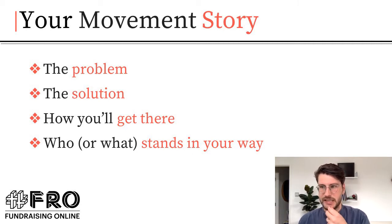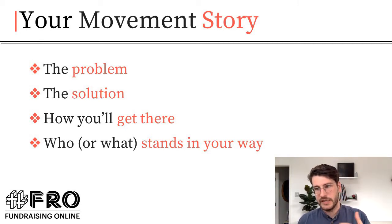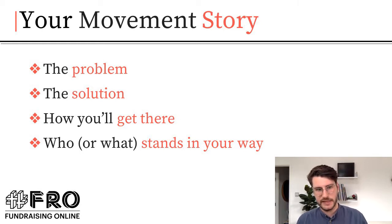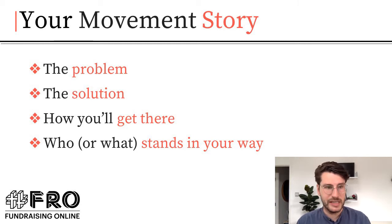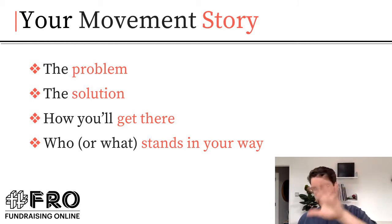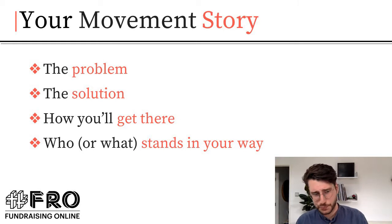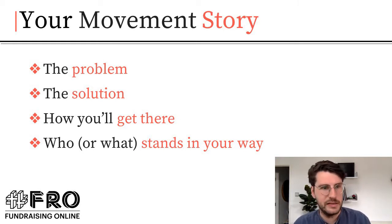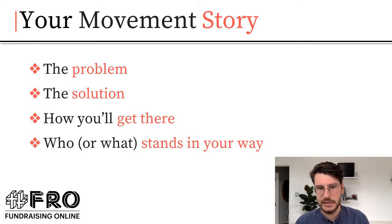A good movement story has four key elements. First, you need to describe what the problem you're trying to solve is. Second, what your solution to that problem is. Third, how you bridge the problem and solution — how you're going to get there. And fourth, who or what stands in your way — who are the villains of your story, essentially.